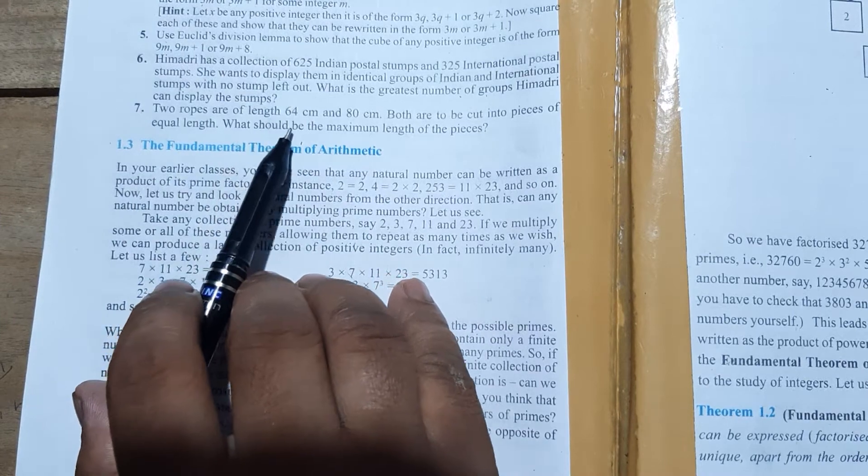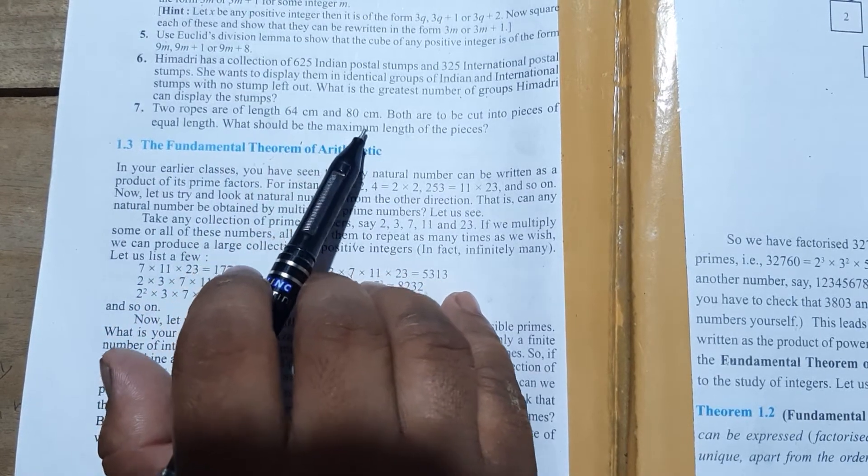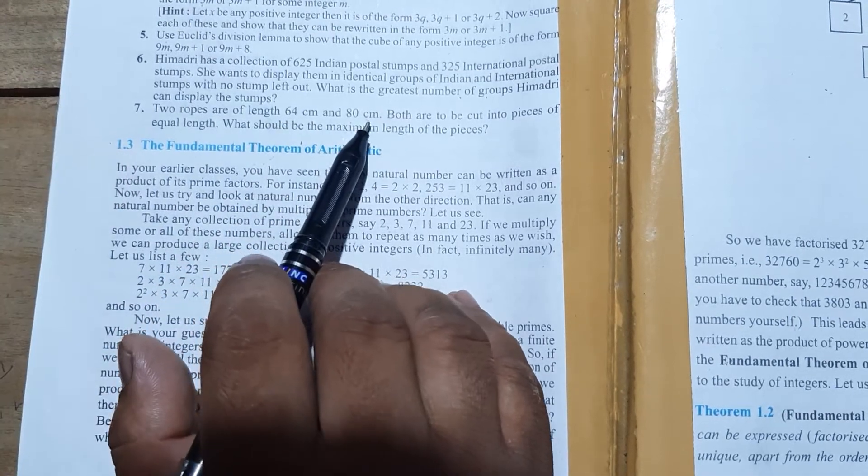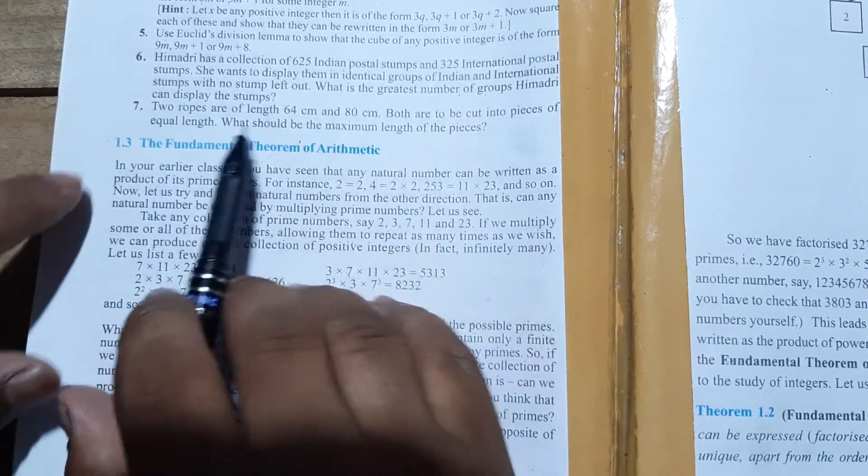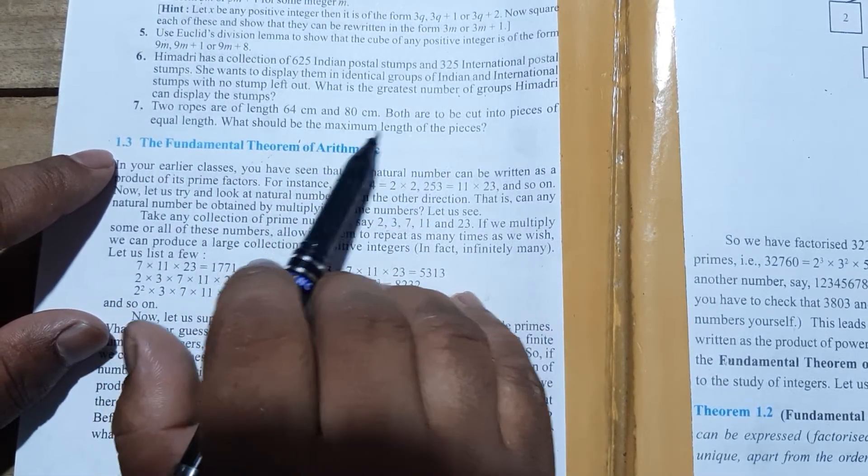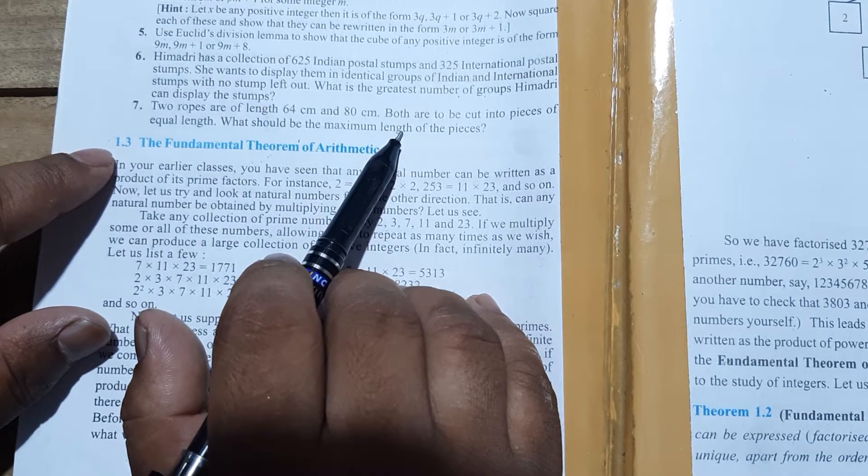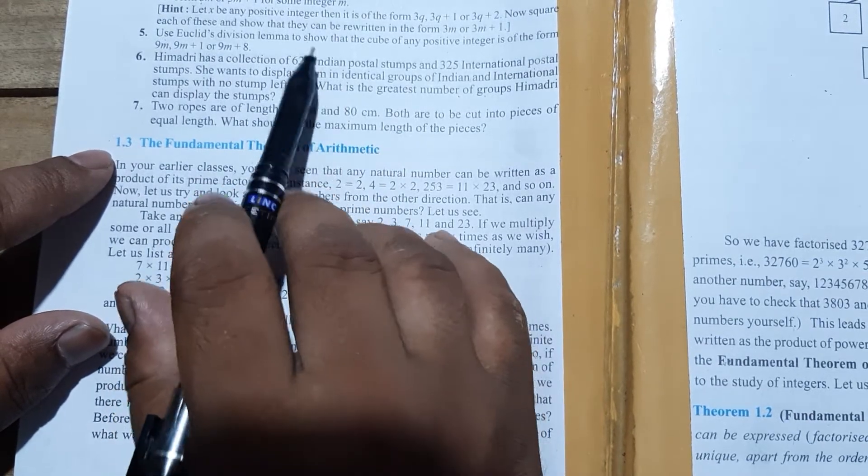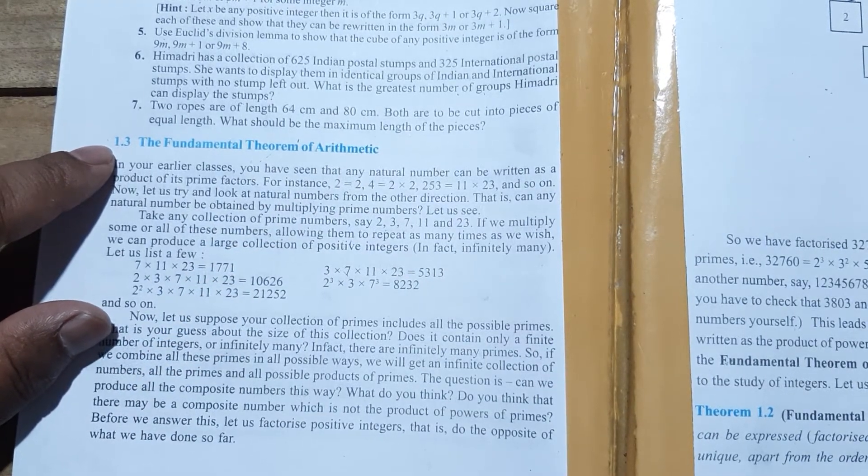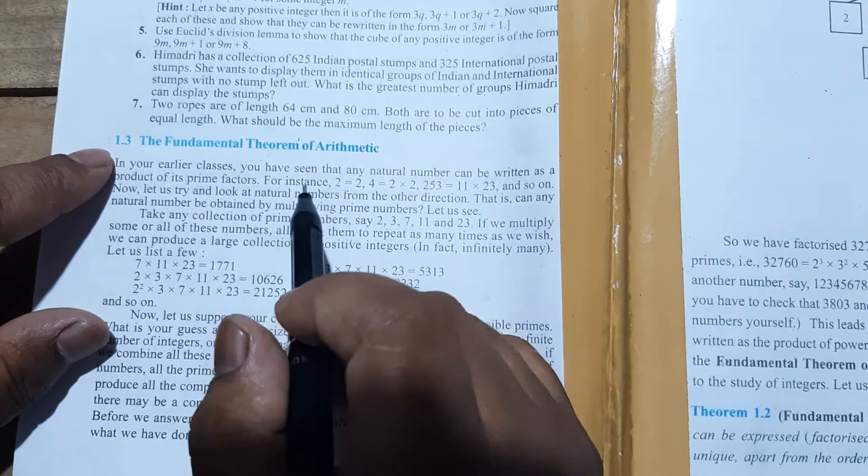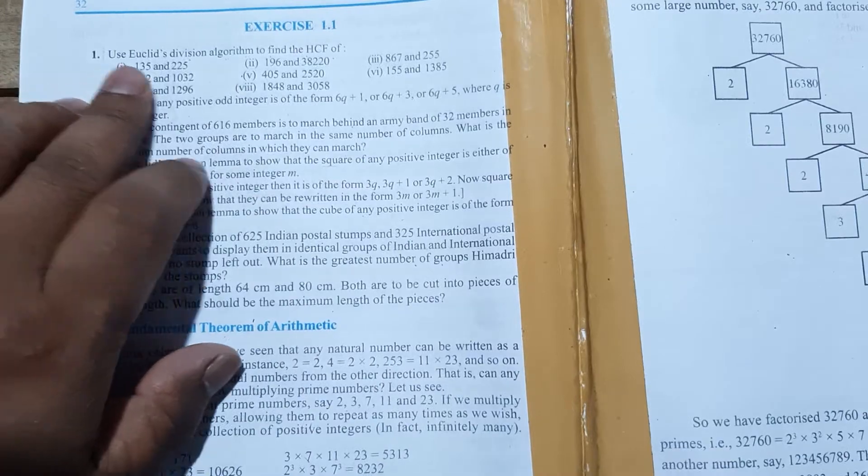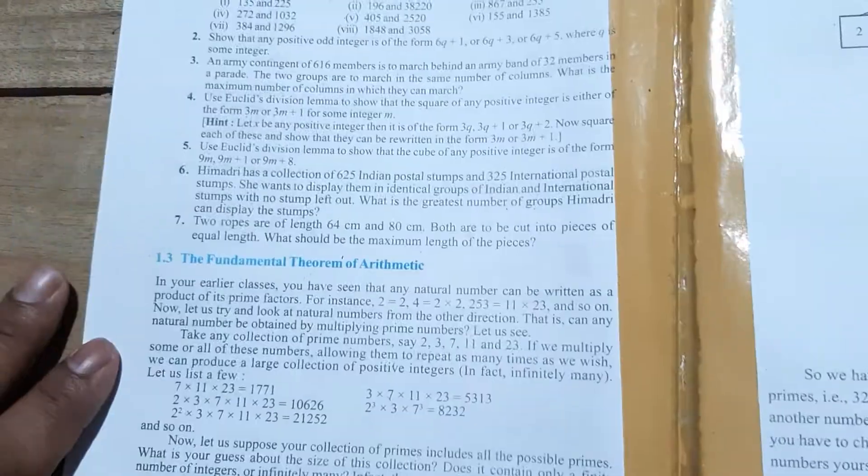In English, the question is: Two ropes are of length 64cm and 80cm. Many ropes are to be cut into pieces of equal length. What should be the maximum length of the pieces? Maximum length means the maximum size. So we need to use Euclid's algorithm.